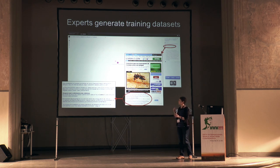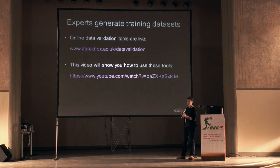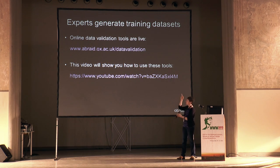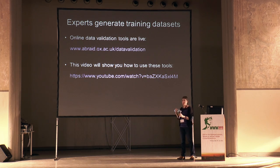This is the interface where users can validate data. A user can select a data point and decide whether it's valid, invalid, or uncertain. This system is now live, so you can go to this address, register, and validate data points — we'd be interested in your feedback. We've also created a video that shows you how to do this.